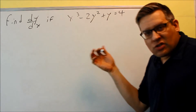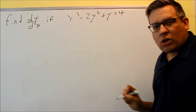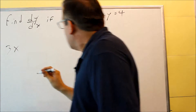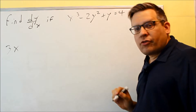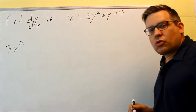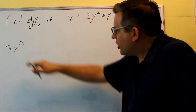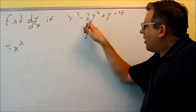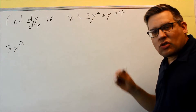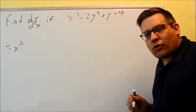When we do the derivative, let's start with the first term. The 3 comes down, subtract 1 from the exponent and you get 2, so 3x squared. That term is done. Now, this next term does not have an x in it, so this is where we're going to apply implicit differentiation.